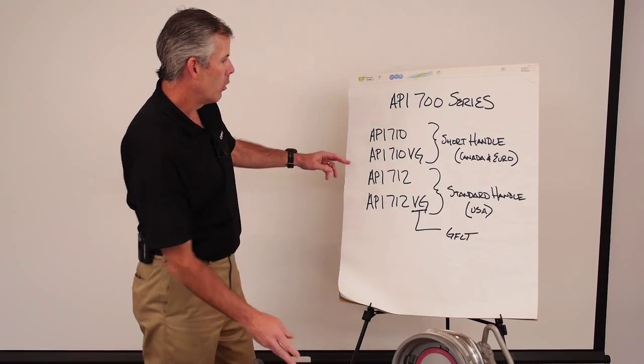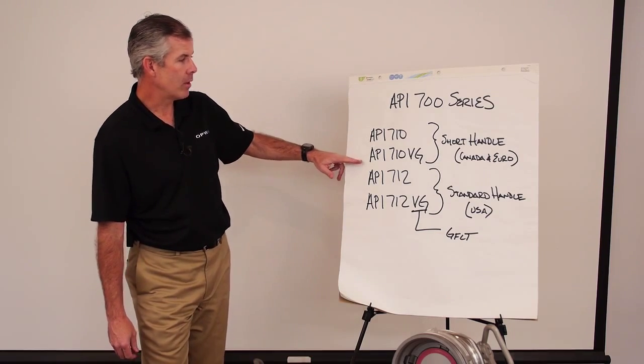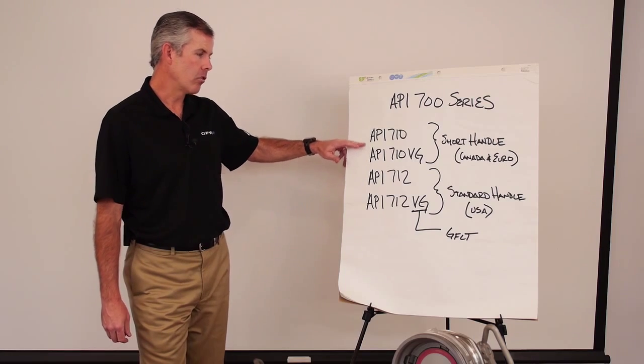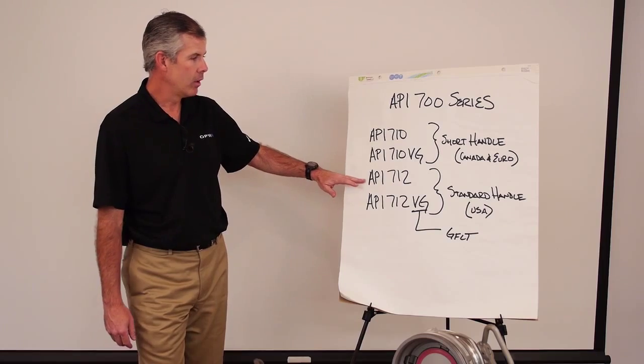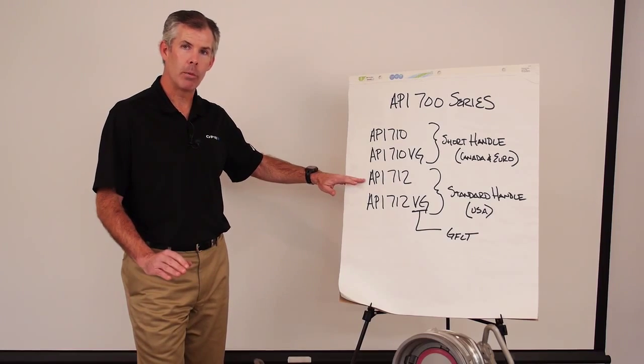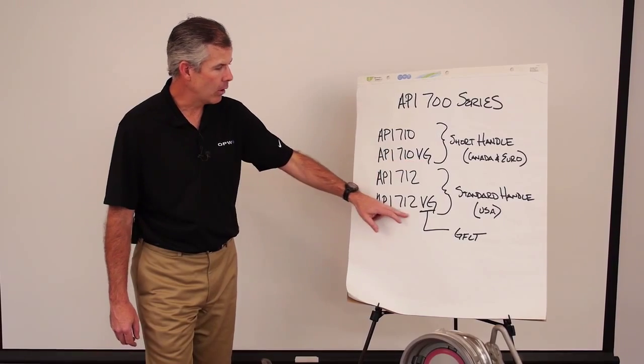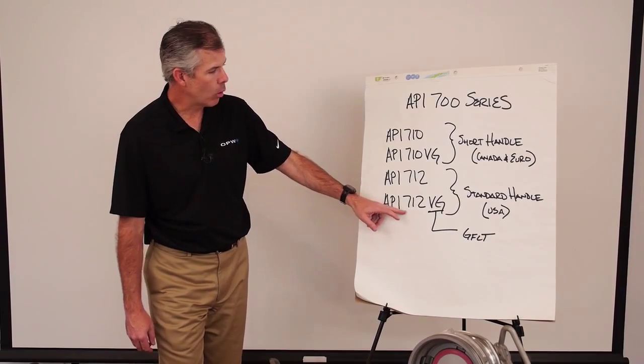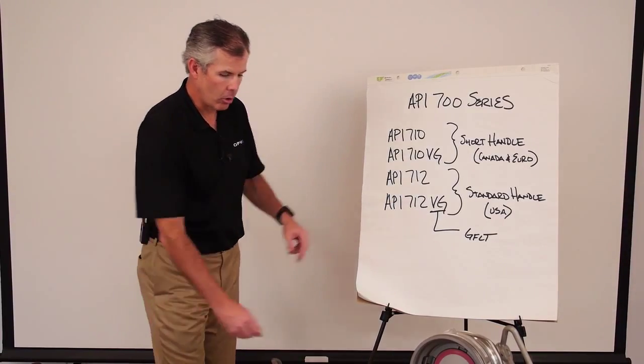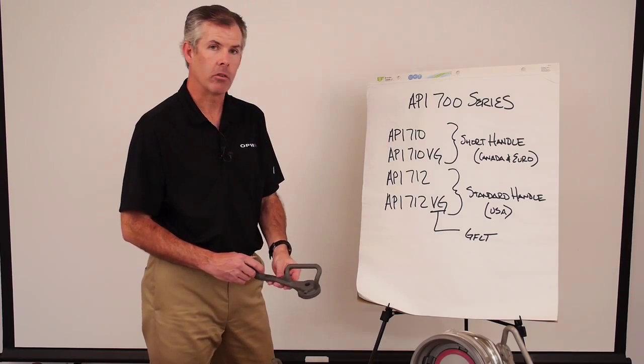The other thing you'll notice in the part number is we either have the 710 or the 710 VG. And this goes back to the seals. The 710 or the 712 is our standard Viton B coupler. If it has a VG after it, it would be our GFLT. So an API 712 VG is our standard handle coupler with Viton GFLT seals.